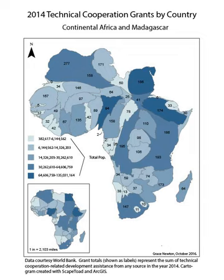The Center for Global Development published a review essay of existing literature studying the relationship between aid and public institutions, concluding that large and sustained aid can have a negative effect on the development of good public institutions in low-income countries. They mentioned Dutch disease, the discouragement of revenue collection, and the effect on state capacity as possible mechanisms for this negative effect. Furthermore, the effect of aid on conflict intensity and onset has been proved to have different impacts in different countries and situations.